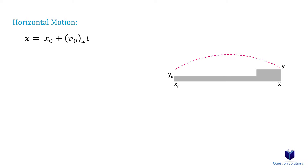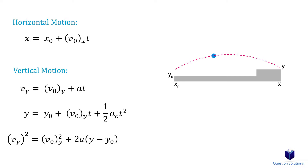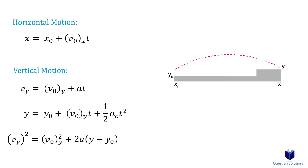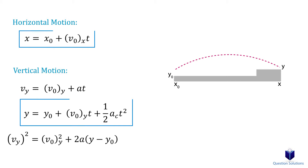Now, the rest of these equations are for vertical motion. In these equations, vy is the final vertical component of the velocity of the object. V0y is the initial vertical component of the velocity. a is acceleration of gravity, which is 9.81 meters per second squared, or 32.2 feet per second squared. t is time. y is the final location in the vertical direction, and y0 is the initial location. In most cases, you would only use the first equation and the third equation to solve problems.